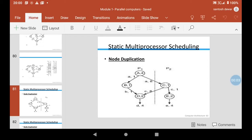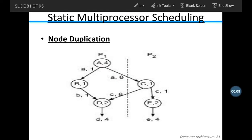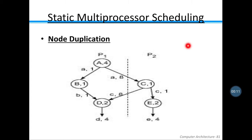Today we are going to discuss static multiprocessor scheduling, and in that we will cover node duplication. In order to eliminate idle time and to further reduce the communication delays among processors, we can duplicate some of the nodes in more than one processor.